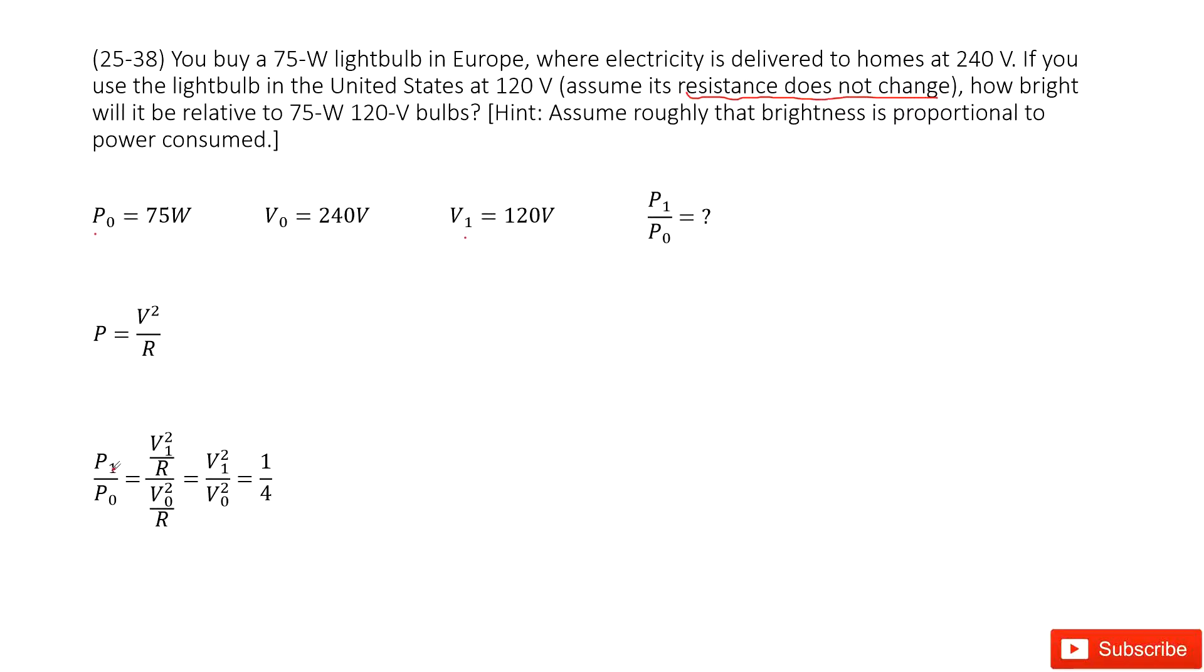Now you can see, in this ratio P₁ over P₀, we can replace P₁ as V₁² over R, P₀ as V₀² over R. R and R can be cancelled. Then you get V₁² over V₀², right? And then you input the values inside. It is 1 over 4. Thank you.